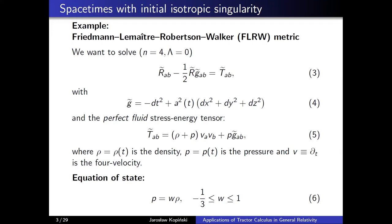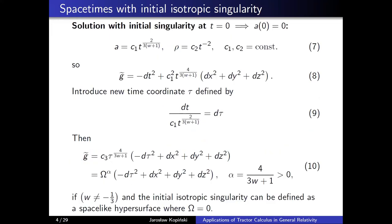Because I want a physically realistic stress-energy tensor, the constant w is restricted to be between minus one-third and one. Taking my assumption about the metric from equation 4, the stress-energy tensor from equation 5, and the equation of state, I can plug everything into the Einstein field equations and solve them explicitly. The solution is visible in equation 7: the function a from the metric is proportional to t to some positive power depending on w, and the fluid's density rho is a constant over t squared. I chose initial conditions such that a is zero on the t = 0 hypersurface.